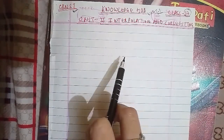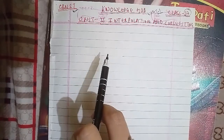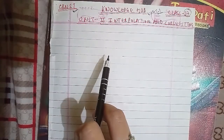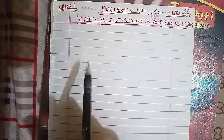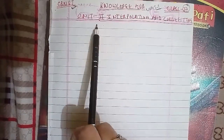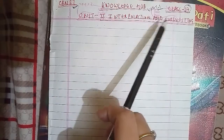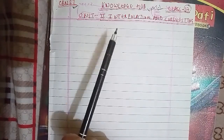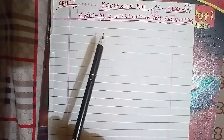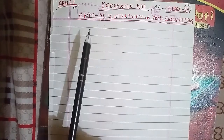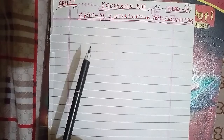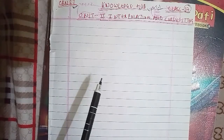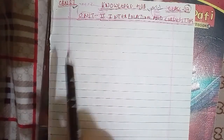In unit 1 we had covered the bisection method, Newton-Raphson method, regular falsi method, and many more. We have also started unit 2 in the last classes, which is named Interpolations and Curve Fitting. We had done many questions there. Before starting, please go ahead with like, share, and subscribe to the channel so that maximum people can get the information at once.